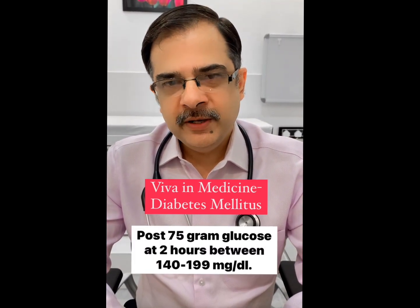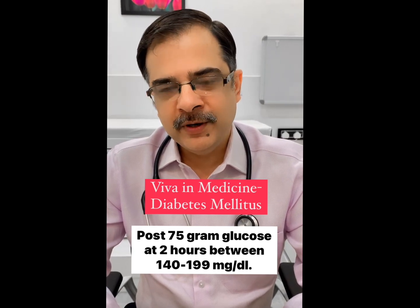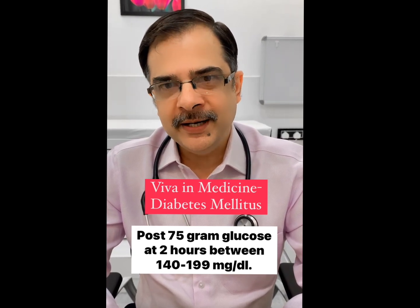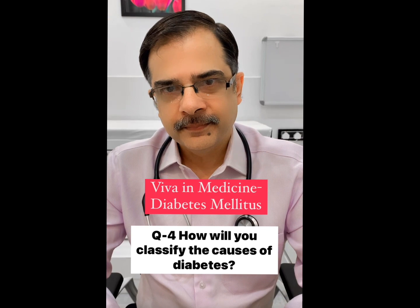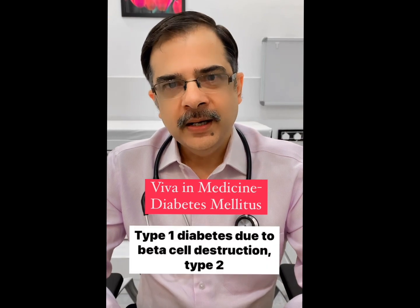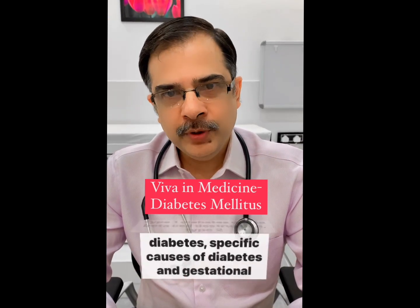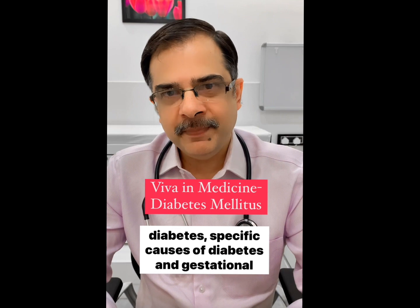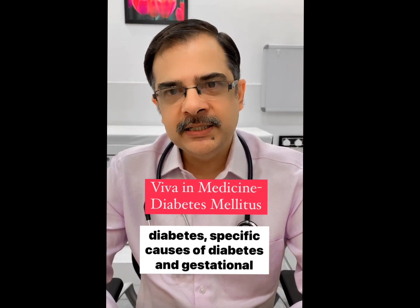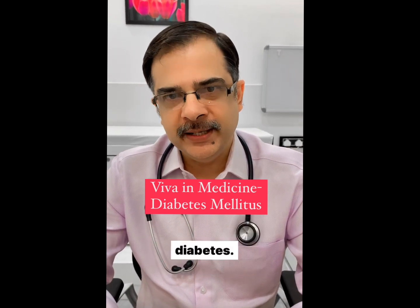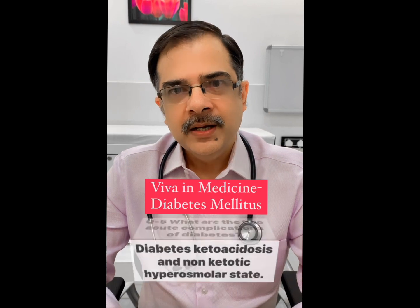Post 75 gram glucose at 2 hours between 140 to 199. How will you classify the causes of diabetes? Type 1 diabetes due to beta cell destruction, type 2 diabetes, specific causes of diabetes, and gestational diabetes.